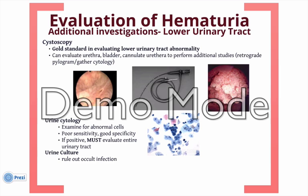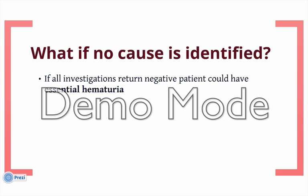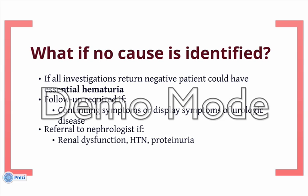A urine culture can rule out any occult urinary tract infection that could be responsible for the hematuria. If after all investigations no significant urologic disease is identified, then the patient can have what's called essential hematuria — which is essentially microscopic blood in the urine with no identifiable cause. Some patients do require further follow-up; if a patient develops recurrent gross hematuria, voiding dysfunction, or any other symptoms suggestive of urologic disease, repeat investigations are warranted. If a patient develops renal dysfunction, hypertension, or significant proteinuria, consider referral to a nephrologist to rule out any significant medical renal disease.